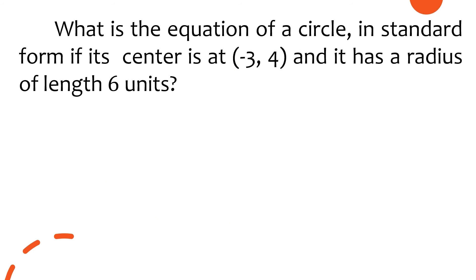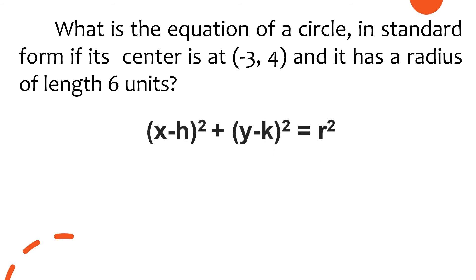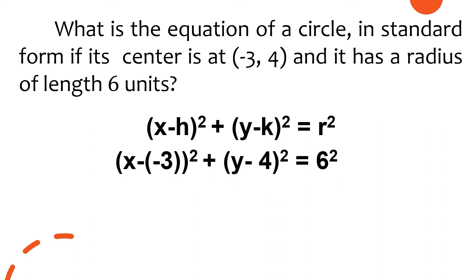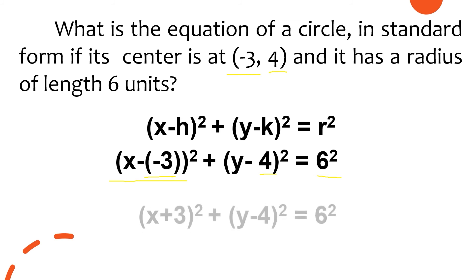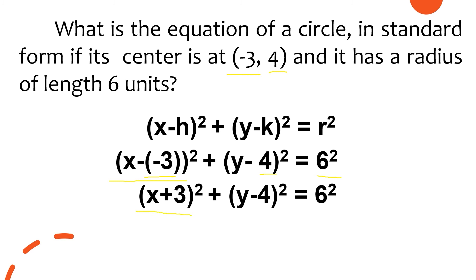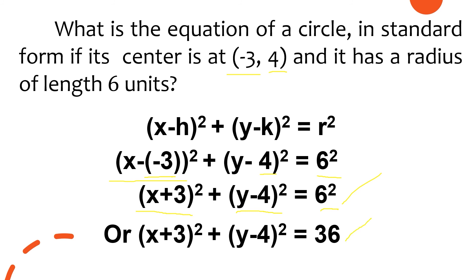Next example: the center is at (-3, 4) and the radius is 6 units. Using the same standard form, since h is negative we place it in parentheses. The value k = 4 becomes -4 in the formula. Simplifying (x − (-3)) gives (x + 3)², and we bring down (y − 4)² = 6². The final answer is (x + 3)² + (y − 4)² = 36.